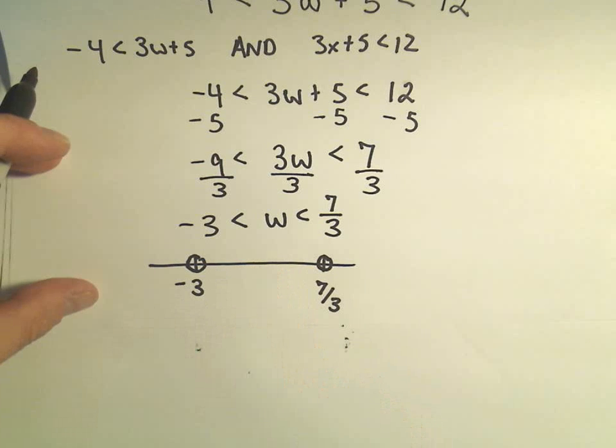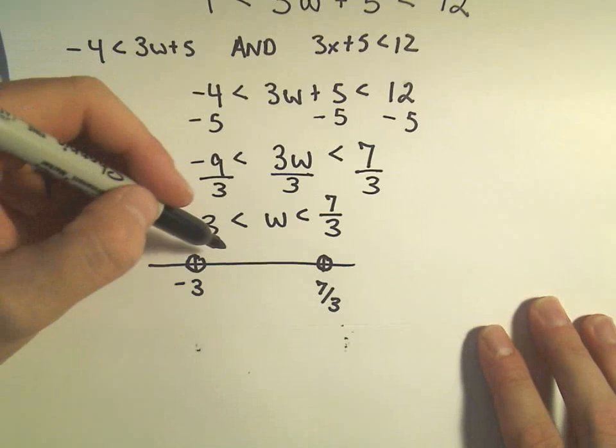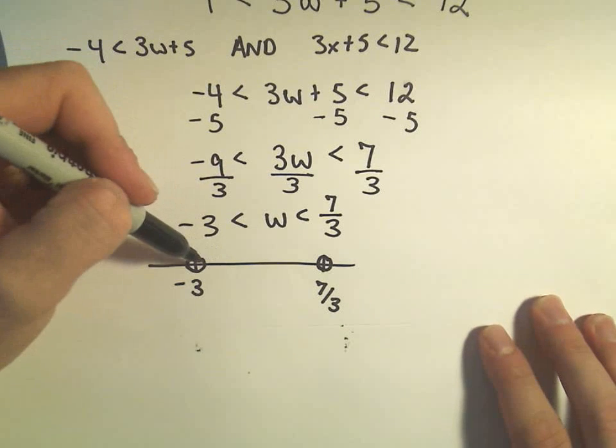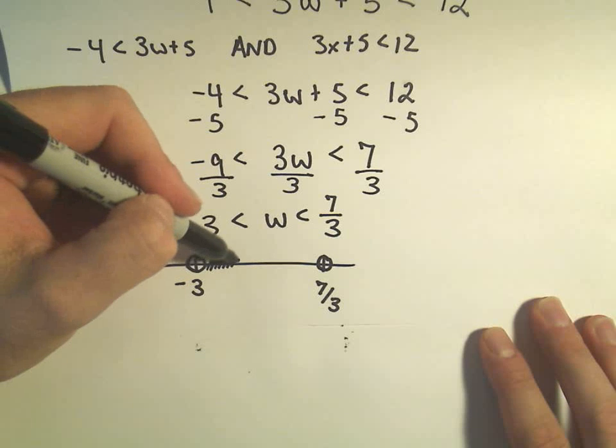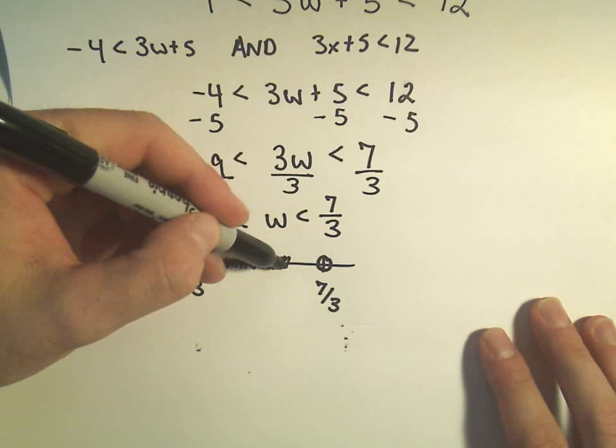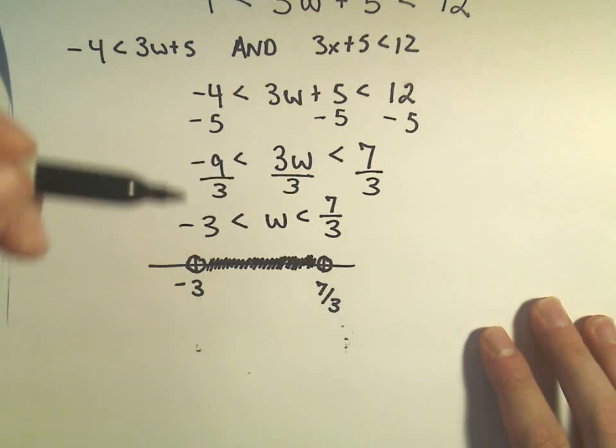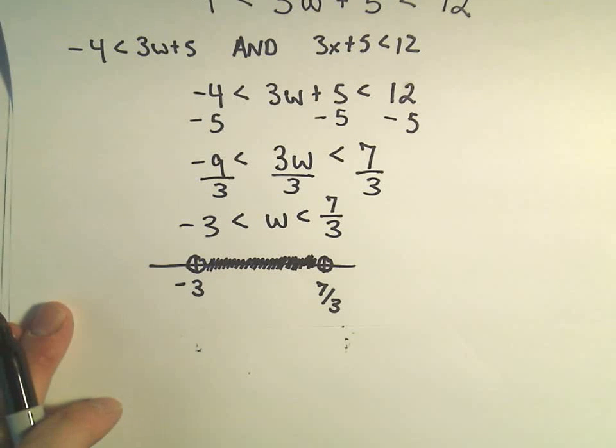Because if I put 0 down there, to me that suggests maybe I have to use that in my interval somewhere and I don't. So I just put these numbers down. It has to be bigger than -3, but smaller than 7 thirds. So the numbers in between there would be the numbers that work.